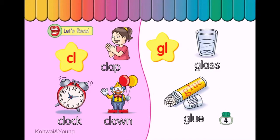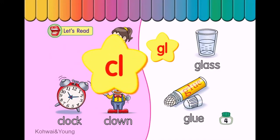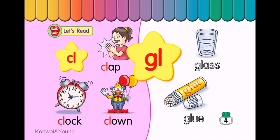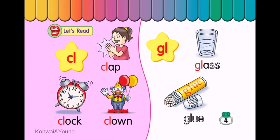Let's read. Cl — Clap. Clock. Clown. Gl — Glass. Glue.